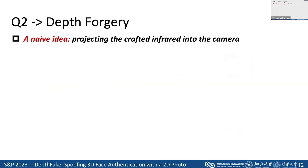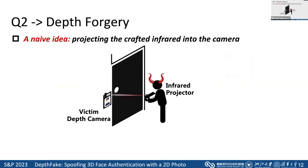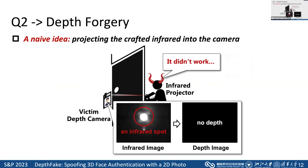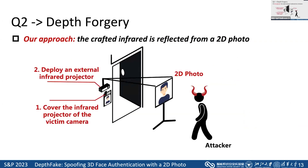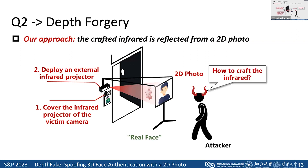Then we deploy the digital depth image into the real world to answer the second question. A naive idea is to project the crafted infrared directly into the camera, but we found it didn't work because the depth camera can only receive an infrared spot and cannot produce any depth. Thus, we used the reflection approach: we cover the infrared projector of the victim camera to avoid interference and use an external projector to project infrared onto a 2D photo, making it reflect back to the victim camera. The attacker then needs to craft the infrared to trick the depth camera.